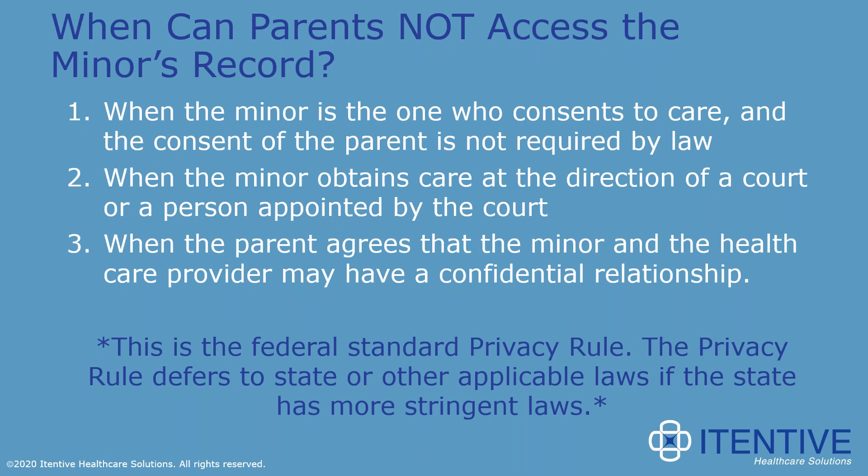Under HIPAA, there are three situations when the parent would not be the minor's personal representative and would be unable to access their record. First, when the minor is the one who consents to care and the consent of the parent is not required by law — for example, testing for an STD. Second, when the minor obtains care at the direction of a court or a person appointed by the court — such as a court approval to obtain an abortion without the parent's knowledge. Third, when the parent agrees that the minor and the healthcare provider may have a confidential relationship, which most often occurs when an adolescent is seen by a physician who knows the family.